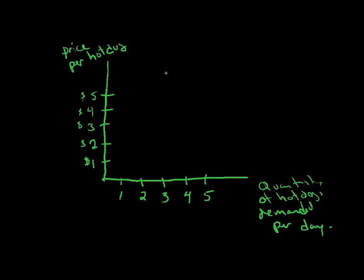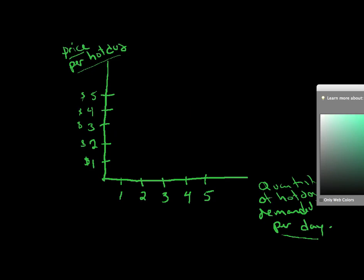Very simple now. Let's talk about what's going to happen with these hot dogs. You'll see here I've got price per hot dog on this axis, and over here I have quantity of hot dogs demanded per day. You have to have a unit of time to make this accurate.